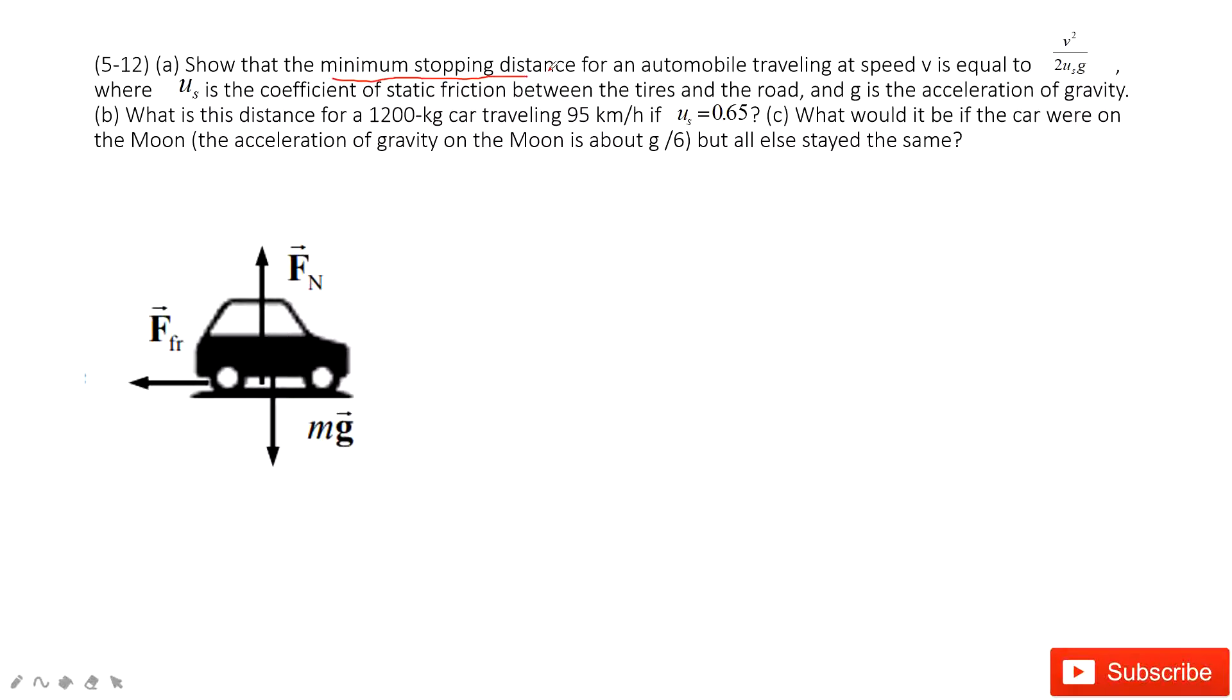We can consider it's displacement, right? If you know the initial velocity is v, we can see there is a car. First thing we know is the initial velocity v, and the final velocity is zero. We need to find the displacement and prove it equal to this.